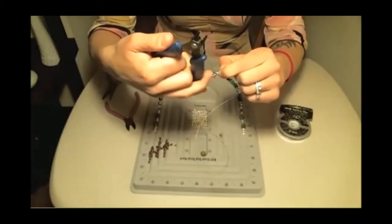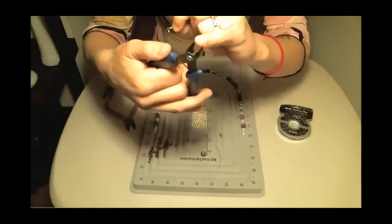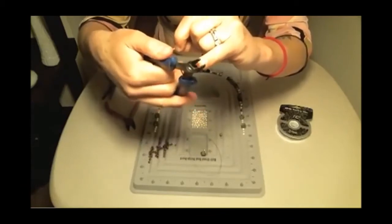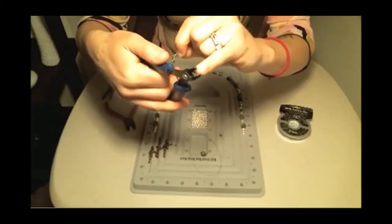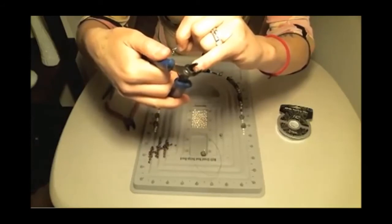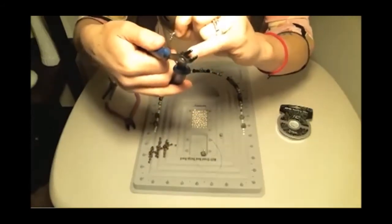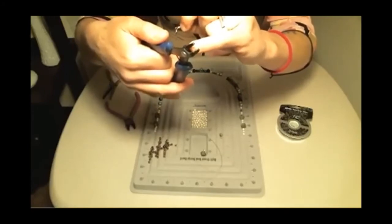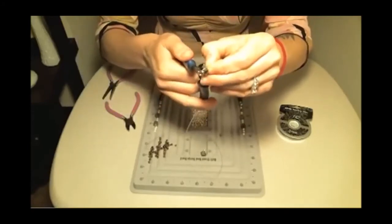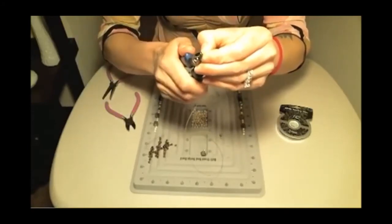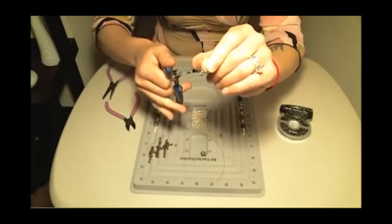Then you're going to take your crimp beads and there should be two little grooves. There's one closest to the end and then there's one in further towards the other end. You're going to use the one with a double groove on it, and you're just going to crush the crimp bead with that. And you just crush it down.